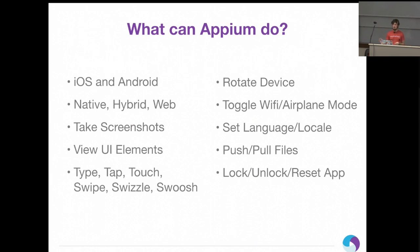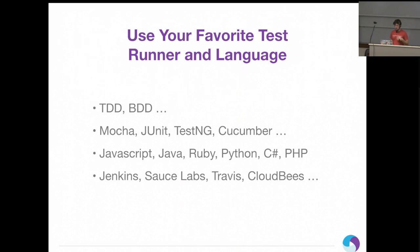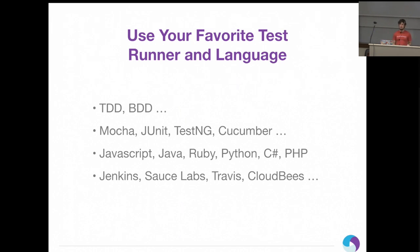Usually you don't have many differences between your iOS and Android test. You can use whatever you want — TDD, BDD, Mocha, Jasmine, Cucumber. Any test framework works. The languages we currently support are JavaScript, Java, Ruby, Python, C#, PHP, and there's actually also a Perl driver. You can hook it into Jenkins, Sauce Labs, Travis, CloudBees — all these continuous integration and continuous deployment services can just call this from the command line.